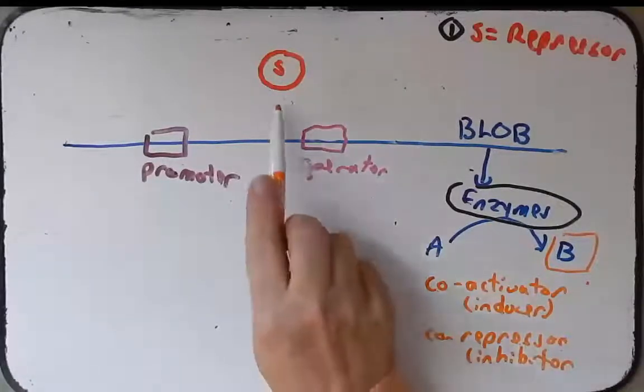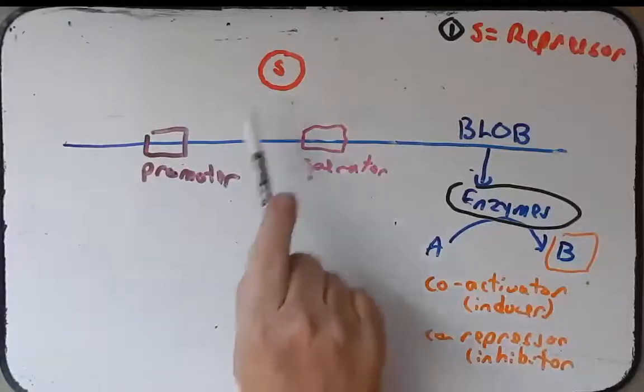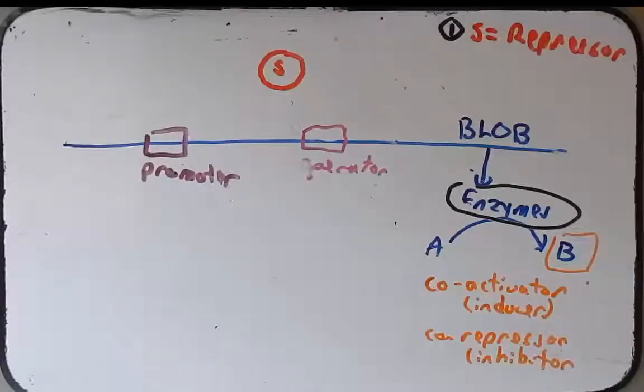Remember, repressors can bind to either co-activators or co-repressors, just like activators can bind to different co-activators or co-repressors. So which one is involved here? Well, the problem gives us a little bit of a hint because it tells us that this compound B is involved in regulating the repressor S. Before we jump right in and try to make a determination of whether B is a co-activator or co-repressor, let's think about what we would predict to see.